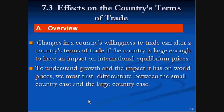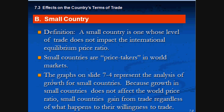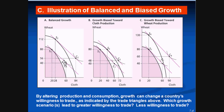We must determine the small country case versus the large country case. A small country, by definition, is a country whose level of trade does not impact the international equilibrium price ratio. They are usually price takers, and the graphs presented here all represent small countries, as the terms of trade were not changed when they expanded their production possibility curves.